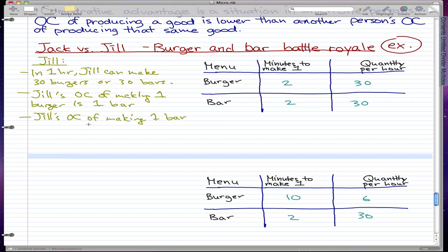So Jill's opportunity cost of making one bar is of course one burger. Jill's customers buy in equal orders - what I mean by that is they'll always buy one burger and one bar in equal order, so they buy in equal numbers.